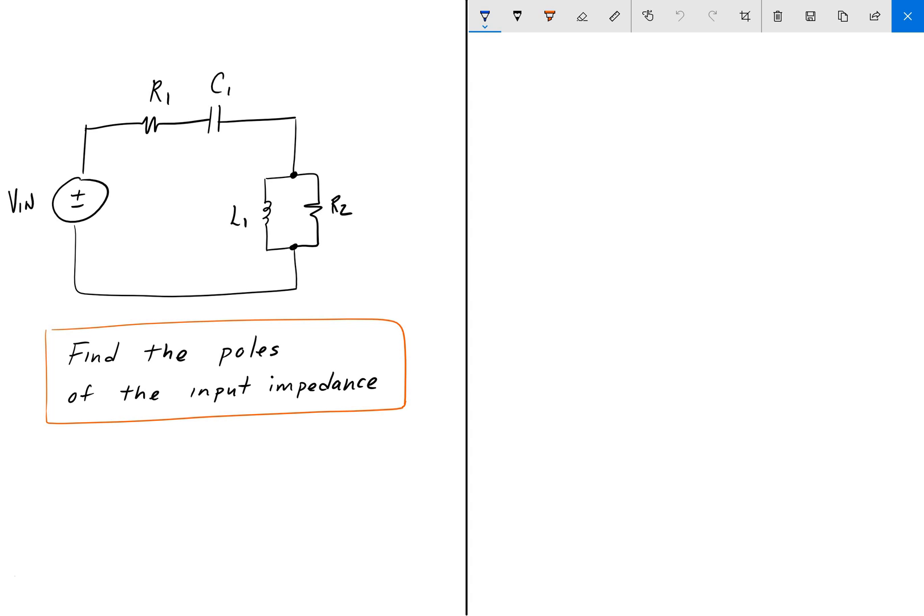We have a resistor R1 in series with a capacitor C1 and both of those in series with the parallel combination of an inductor L1 and another resistor R2. And here we're asked to find the poles of the input impedance.